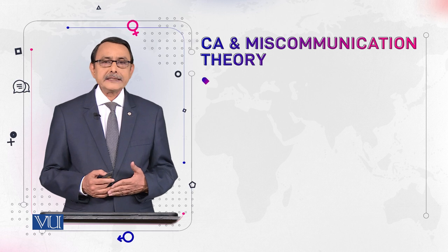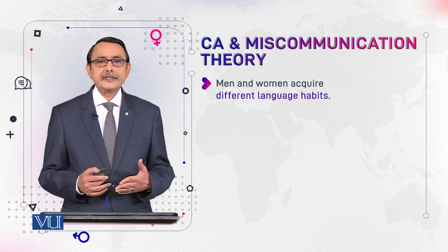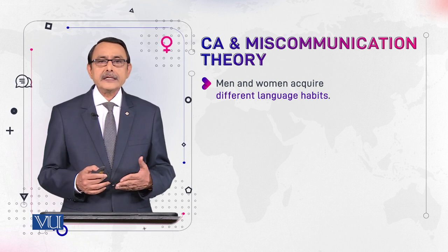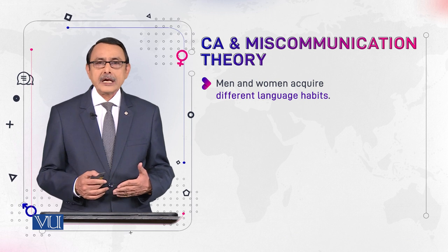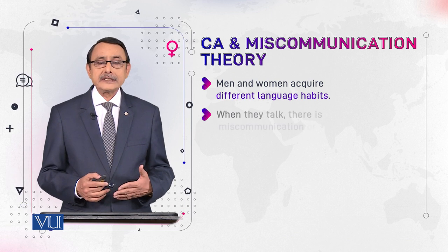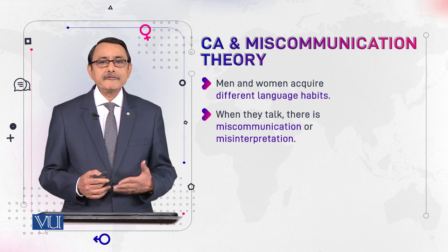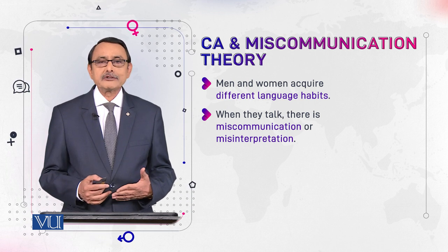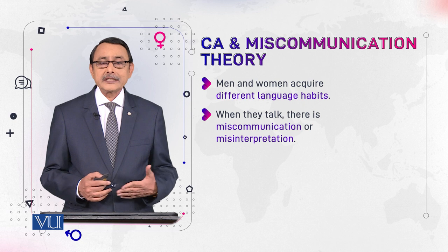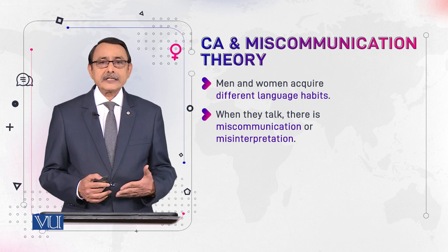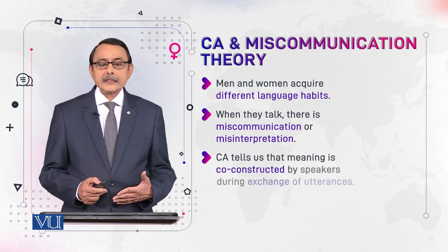Miscommunication theory says that because males and females interact in separate domains, they learn the speech habits of their own domain and never mix with each other. Whenever there is a situation in which they interact, because they are unfamiliar with the language habits of each other, they may misunderstand or misinterpret each other. This is called miscommunication theory.